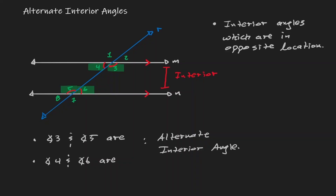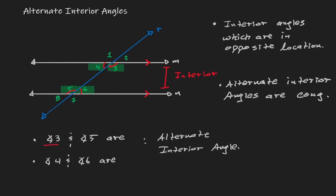Now that we know how to identify them, we can talk about the property. Alternate interior angles are congruent as well. Because angle three and angle five were alternate interior angles, angle three is congruent to angle five. Angle four and angle six were alternate interior angles, so angle four and angle six are also congruent to each other.